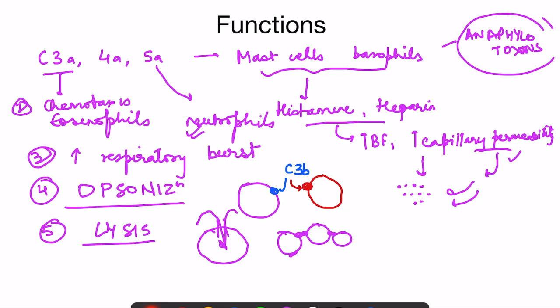In summary, complement proteins help at every step: inflammation, increased capillary permeability, diapedesis of neutrophils, chemotaxis of neutrophils and eosinophils, increasing the respiratory burst of neutrophils, opsonization, and lysis. All of this is localized to the site of infection because C3B attaches to the microbial surface, with the rest of complement activation occurring nearby.